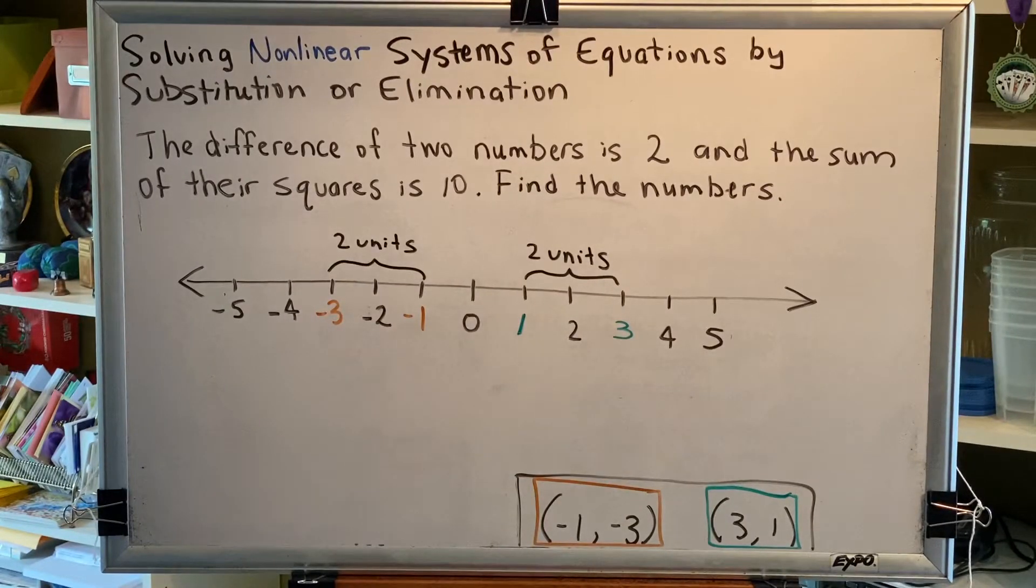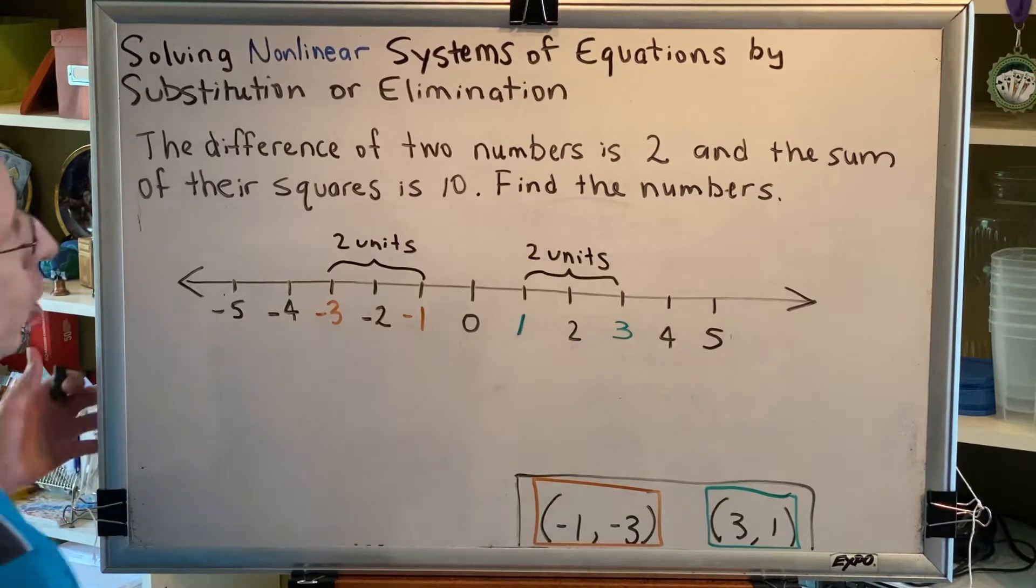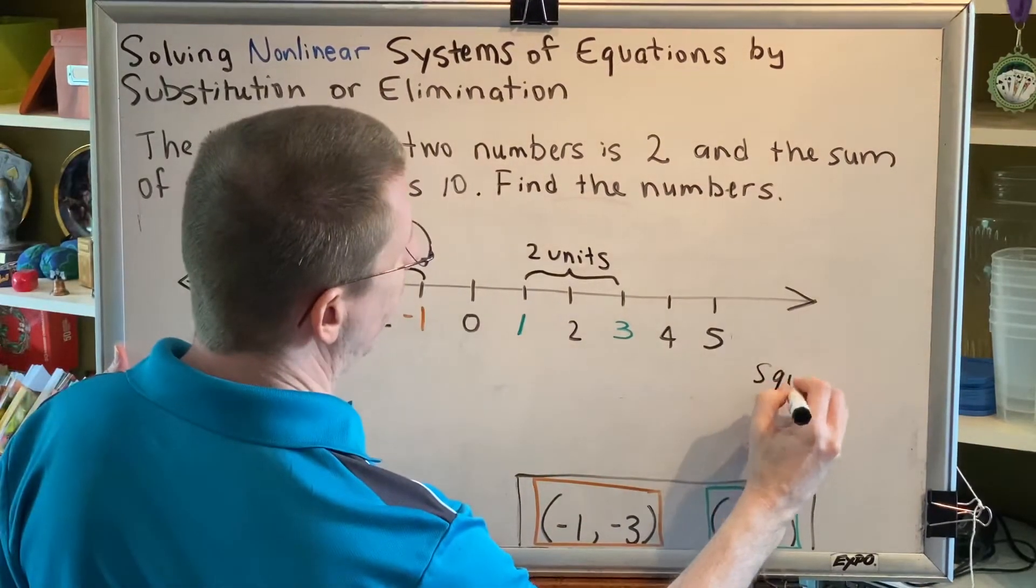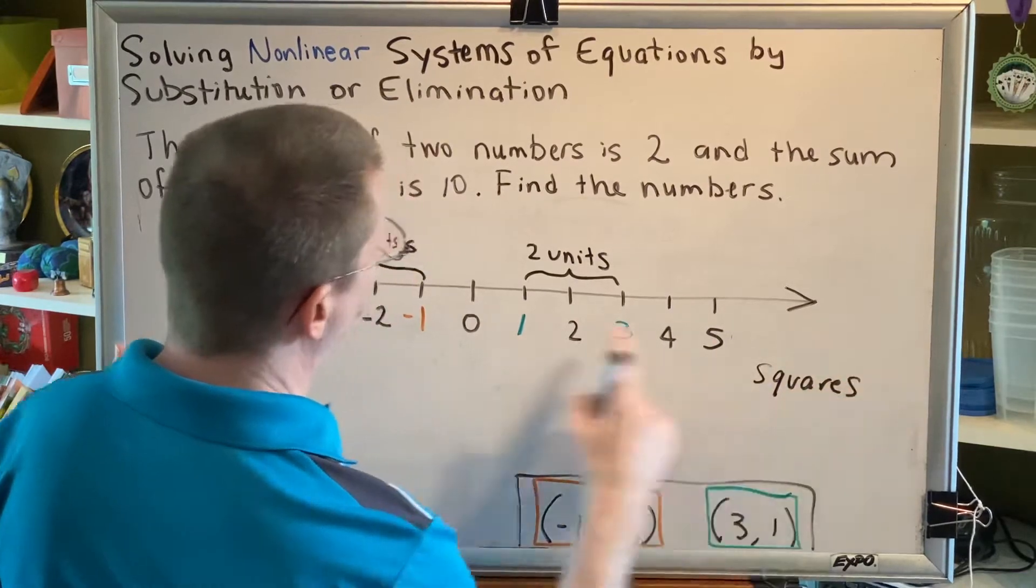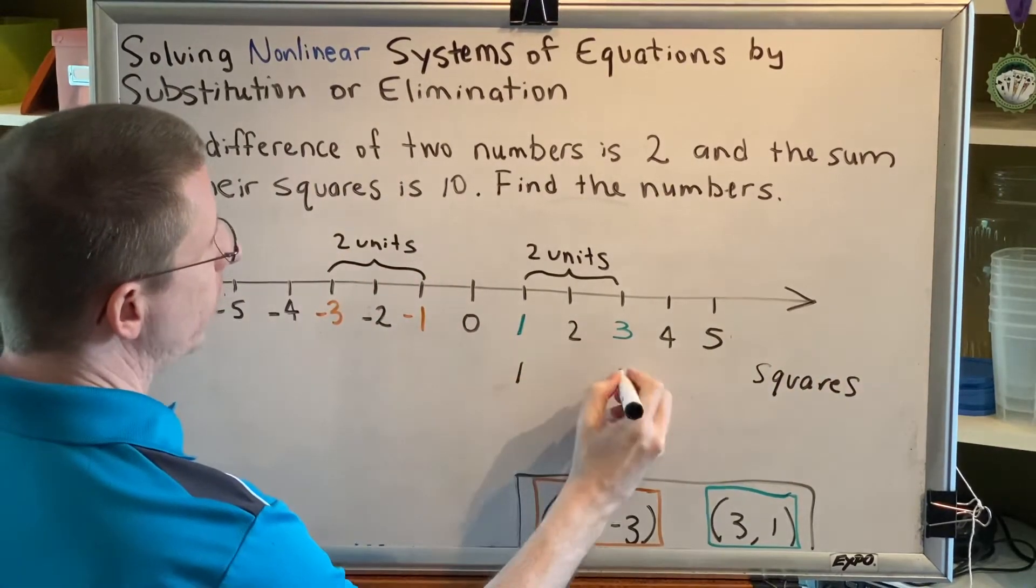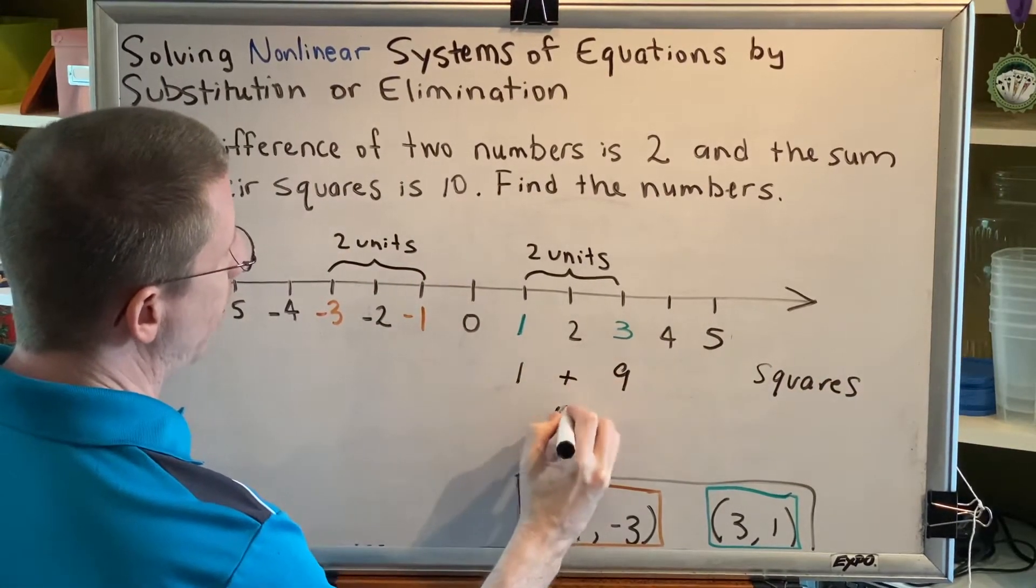The next thing is that the sum of their squares is 10. That means square each number and then add them together. Let's write our squares directly underneath here. 1 squared is 1, 3 squared is 9, and 1 plus 9 is 10.